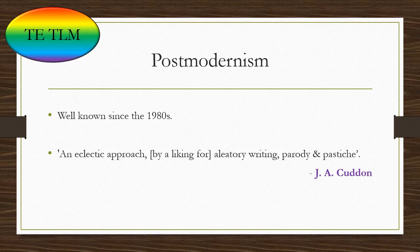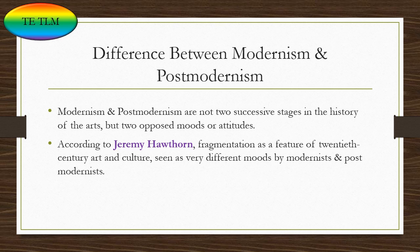This description doesn't really show much difference between modernism and postmodernism, as the word 'eclectic' encompasses the use of fragmented forms, which is one characteristic feature of modernism, and 'aleatory' refers to forms which incorporate an element of randomness or chance. By knowing the difference between modernism and postmodernism you may get a clearer picture of what postmodernism is.